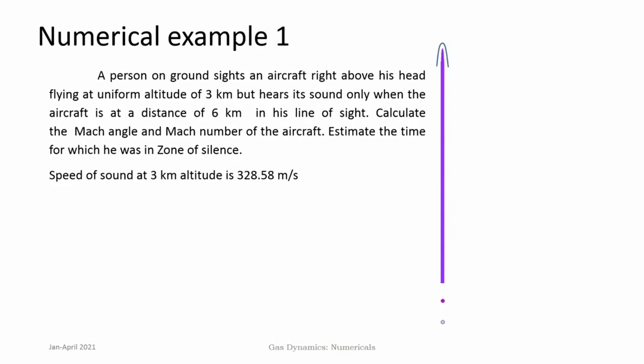In example 1, a person on the ground sights an aircraft right above his head flying at a uniform altitude of 3 kilometers, but hears sound only when the aircraft is at a distance of 6 kilometers in his line of sight. Calculate the Mach angle and Mach number of the aircraft, and estimate the time for which he was in the zone of silence.